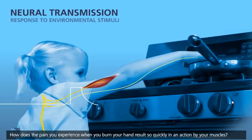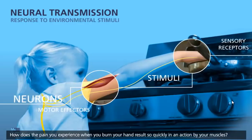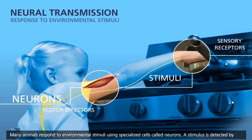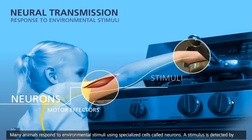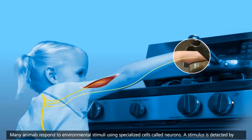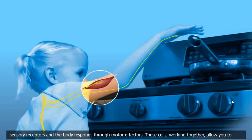How does the pain you experience when you burn your hand result so quickly in an action by your muscles? Many animals respond to environmental stimuli using specialized cells called neurons. A stimulus is detected by sensory receptors and the body responds through motor effectors.